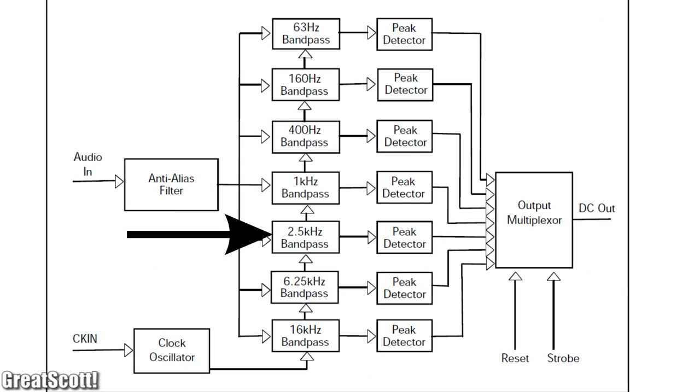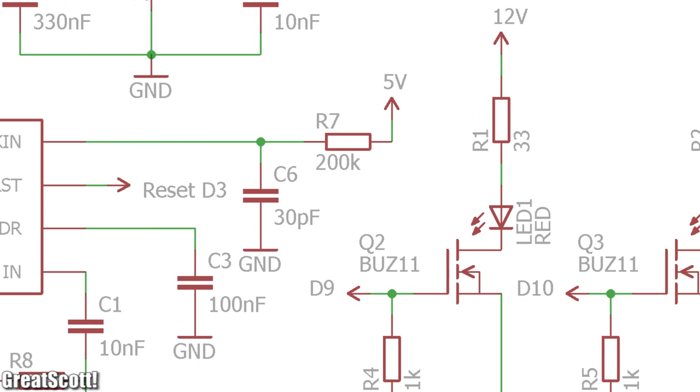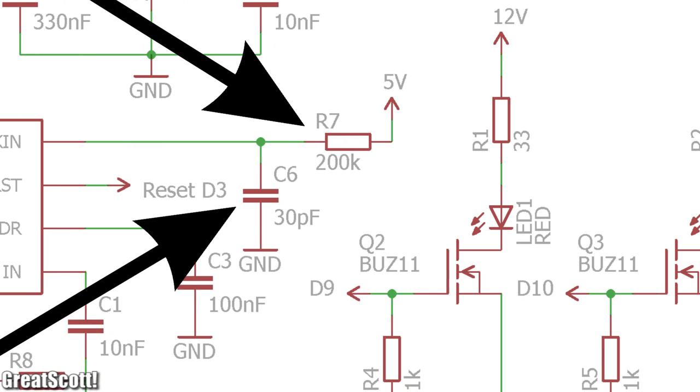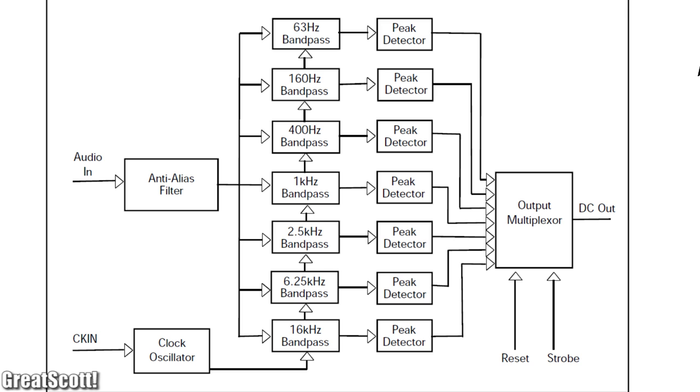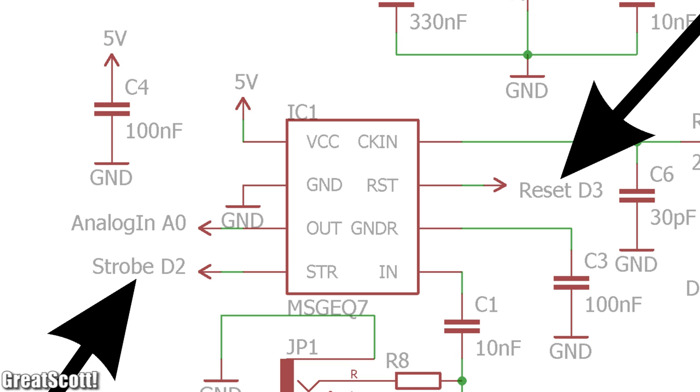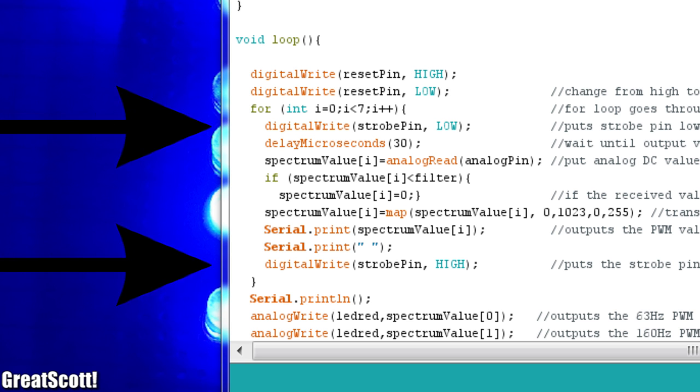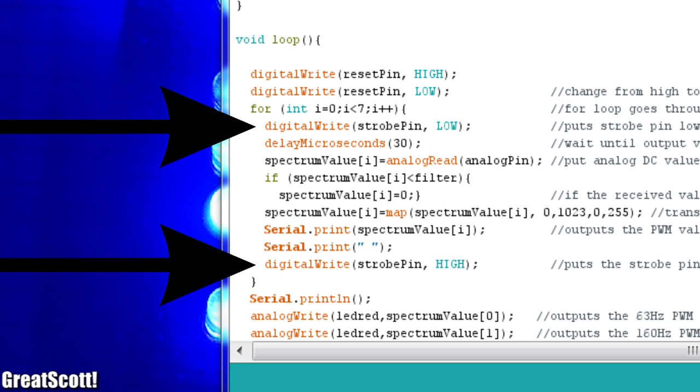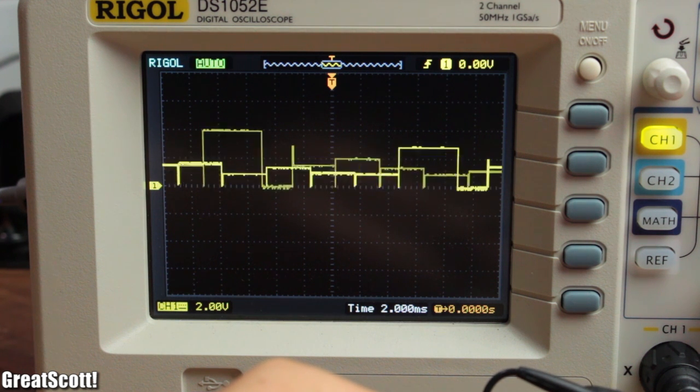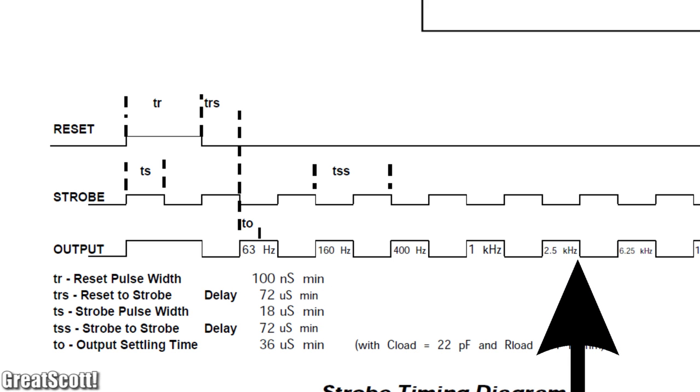We go through those seven bands with a frequency of around 165 kHz by using a 30 pF and 200 kOhm resistor for the clock signal. But since we only have one output, the IC has a built-in multiplexer, which we can control with two pins of the Arduino. First of all, the reset pin gets pulled high and shortly after low again. Then with each cycle of pull high and low of the strobe pin, we get our analog DC value on the output pin for each frequency, starting with the low one all the way to the highest one.